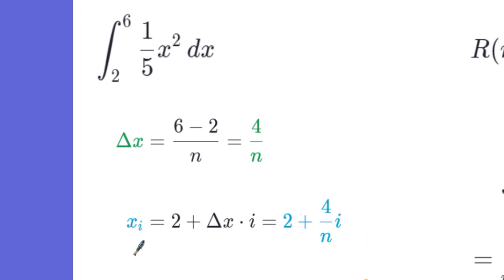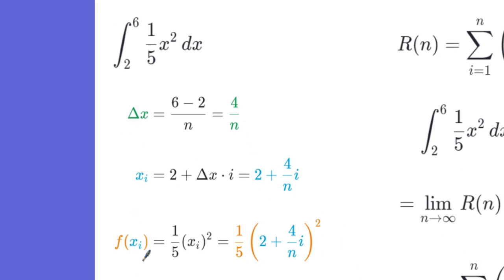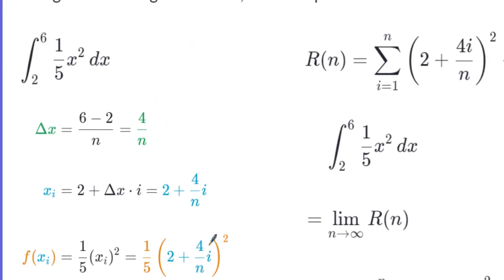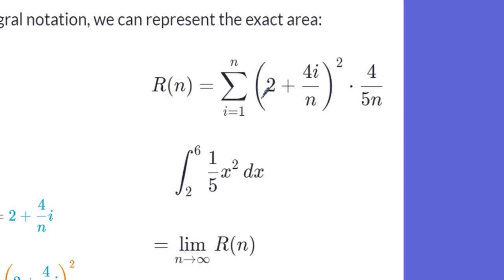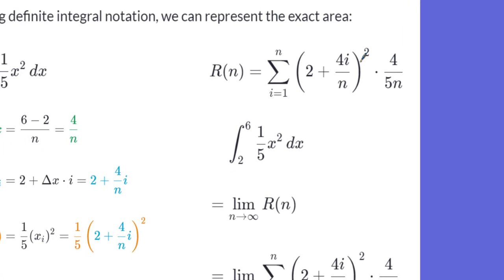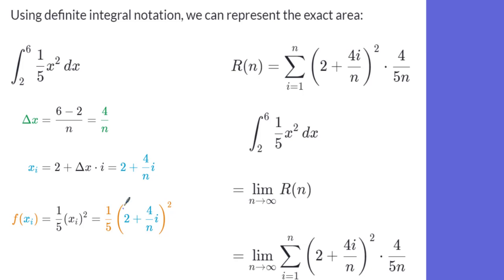x naught equals our lower limit a plus delta x times i. Our lower limit is 2, plus delta x (4/n) times i. Plugging this in: f(xi) = (1/5)(xi)² = (1/5)(2 + 4i/n)². The rectangle's area is therefore the summation from i=1 to n of (2 + 4i/n)² times (1/5) times (4/n).